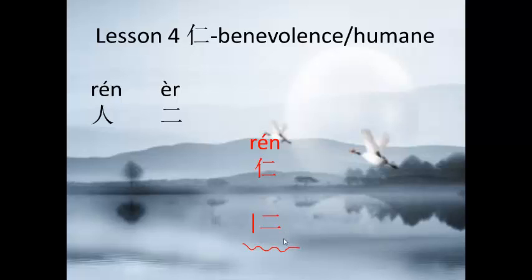The right part has two horizontal lines which means 阴. 阴 represents female, vagina, earth or even numbers. So, 阴 and 阳 together we have this character 仁.